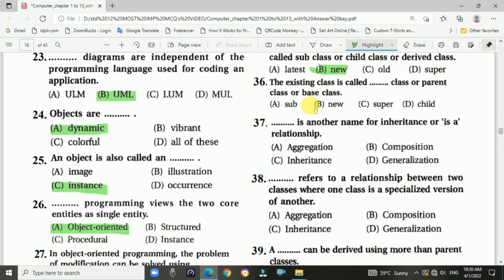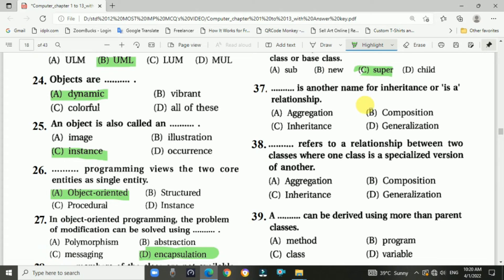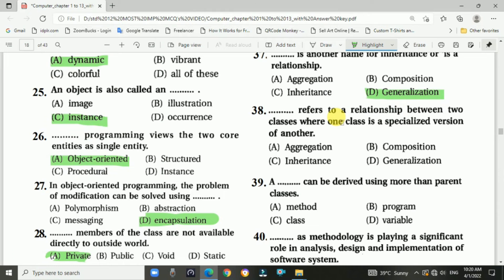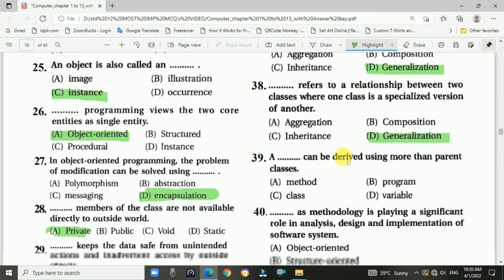Question number thirty-six: The existing class is called blank class or parent class or base class. Answer is superclass. Question number thirty-seven: Blank is another name for inheritance or is-a relationship. Answer is generalization. Question number thirty-eight: Blank refers to the relationship between two classes where one class is a specialized version of another. Answer is again generalization.